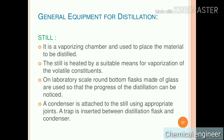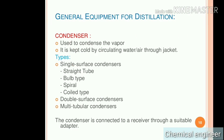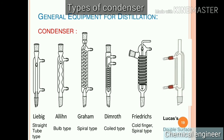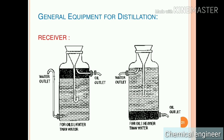The chamber where vaporization of the feed takes place is called the still. The still is heated using an external heating source. Vaporization of the required feed takes place in the still. The condenser condenses the vaporized product — mostly water is used for condensing. The condensed liquid is then collected in a receiver. Generally its temperature is kept lower so that product loss is minimized.